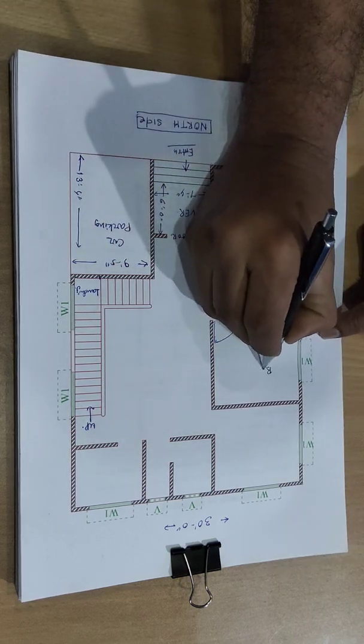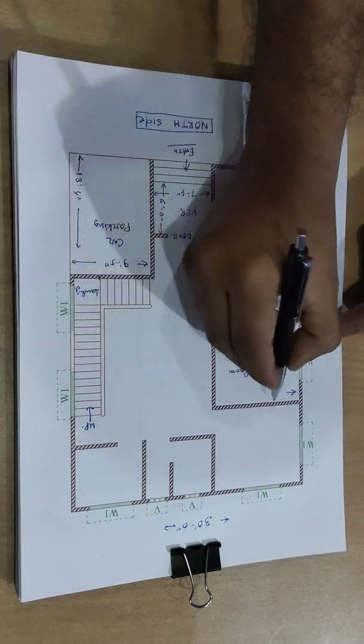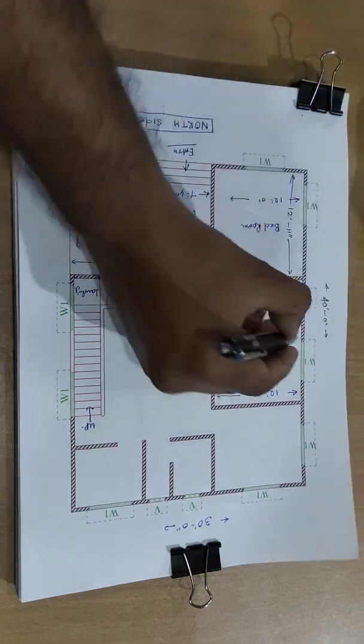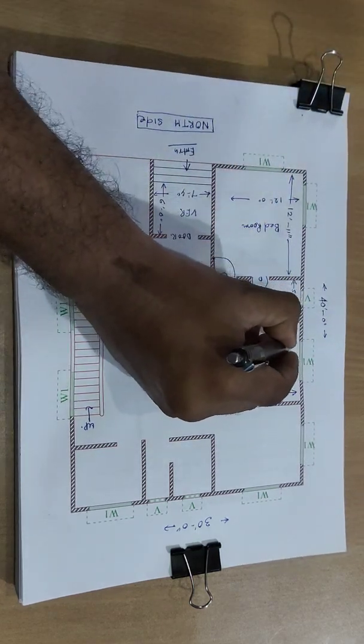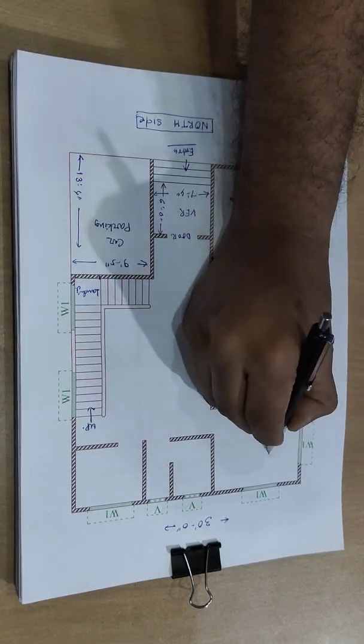Second bedroom. Size 12 feet, same direction, and 10 feet. And bedroom, third bedroom.